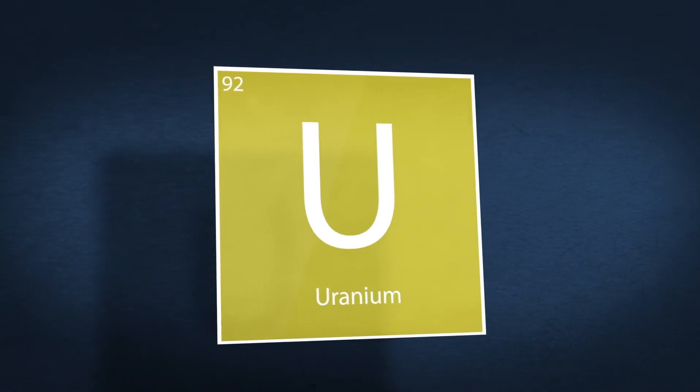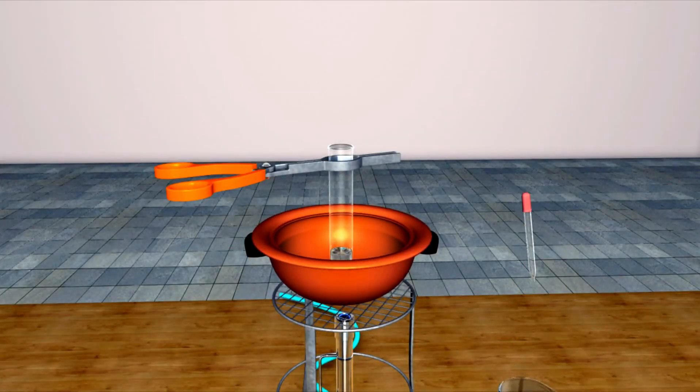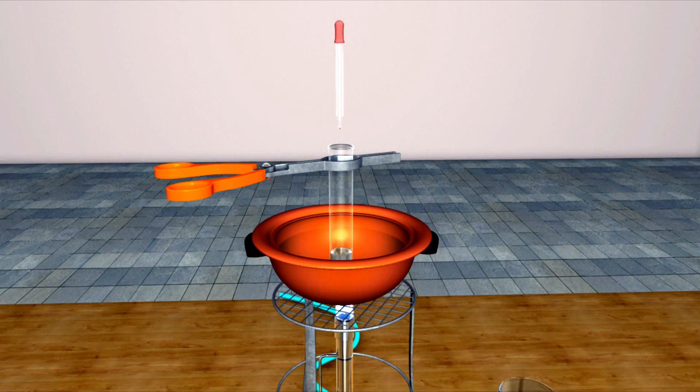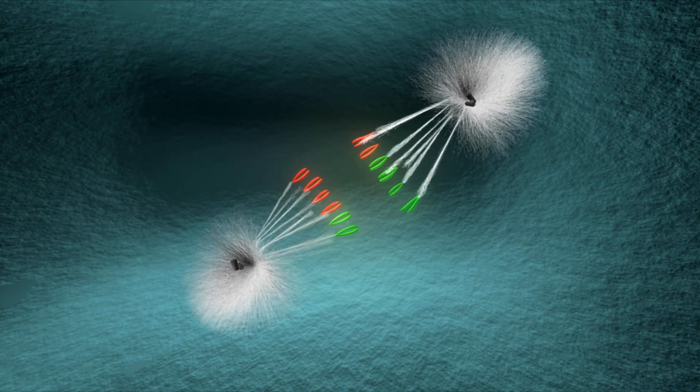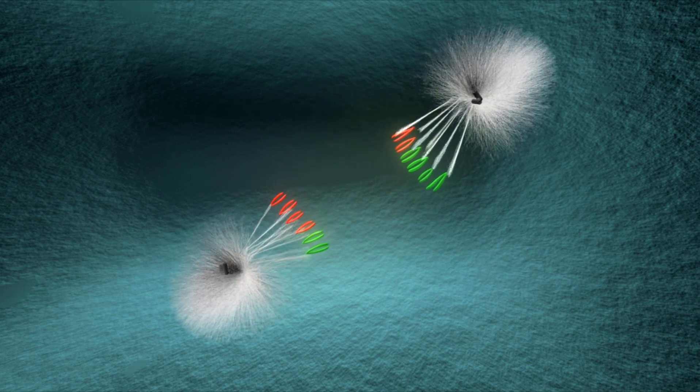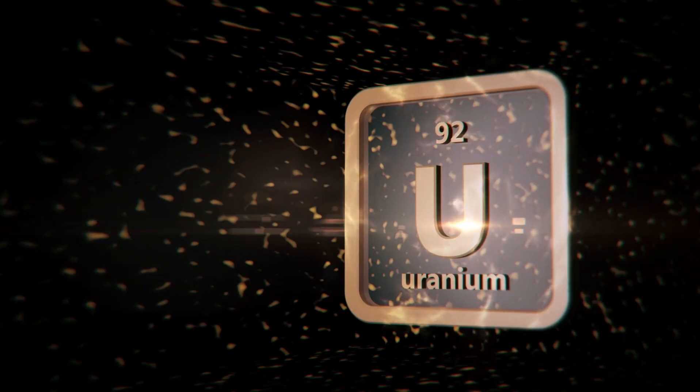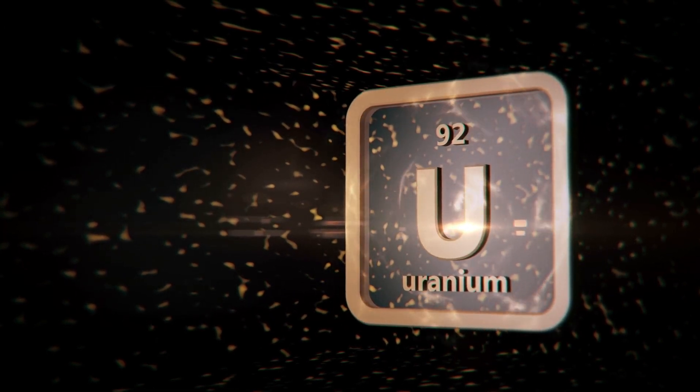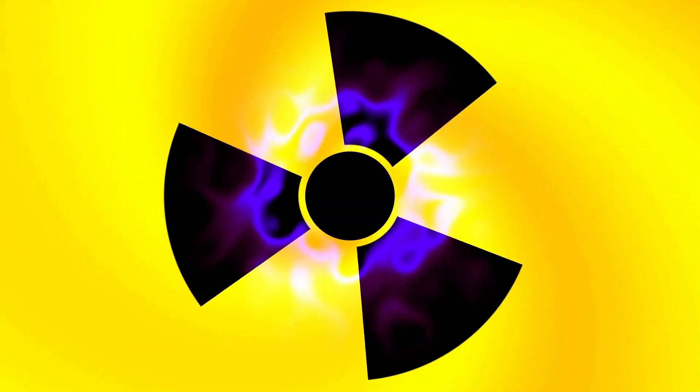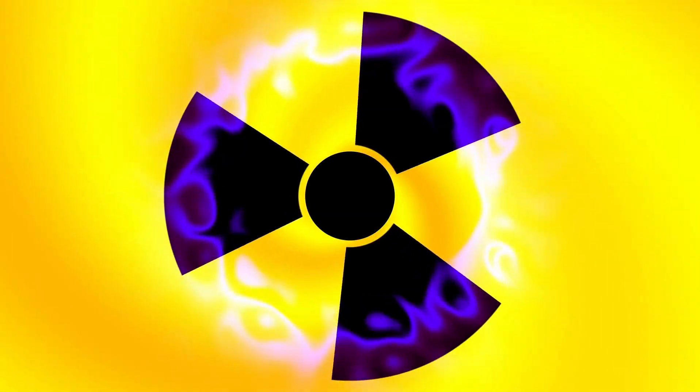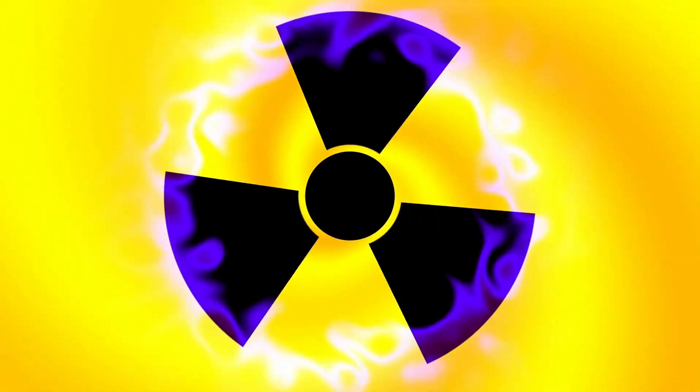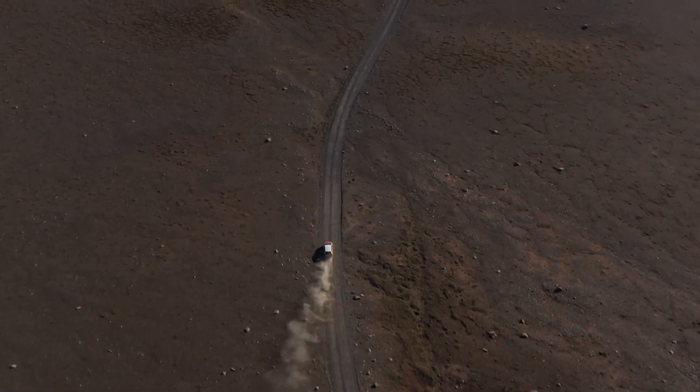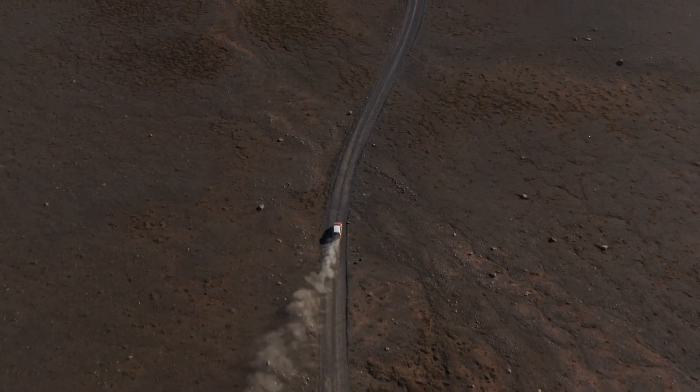This extreme tilt gives Uranus the most extreme seasons in the solar system. Each pole experiences 42 years of continuous sunlight followed by 42 years of darkness. During the Voyager 2 flyby in 1986, Uranus appeared eerily featureless, earning it a reputation as the boring planet. However, recent observations from ground-based telescopes and the Hubble Space Telescope have revealed dynamic weather patterns, including massive storms and faint auroras.